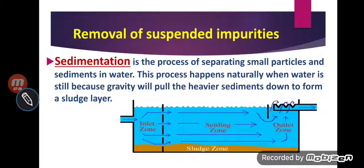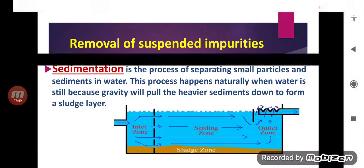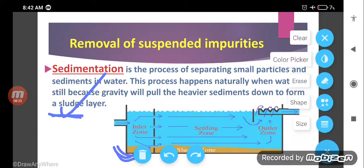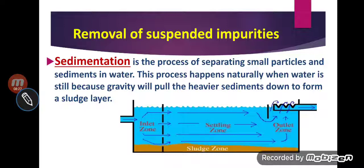The first process is sedimentation. We have already discussed sedimentation. Sedimentation is a process of separating small particles and sediment in water. This process happens naturally when water is still, because gravity will pull the heavier sediment down to the bottom layer — that settled matter is called sludge. Sedimentation can be used to remove heavy dirt particles from the water.